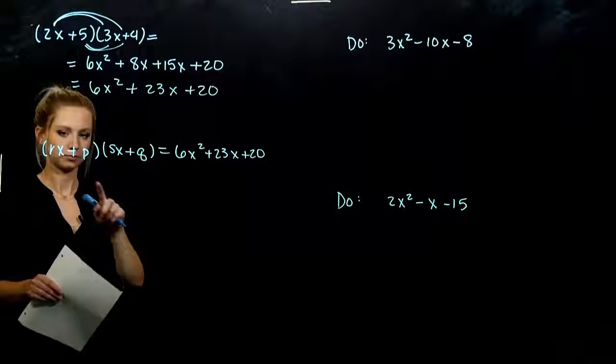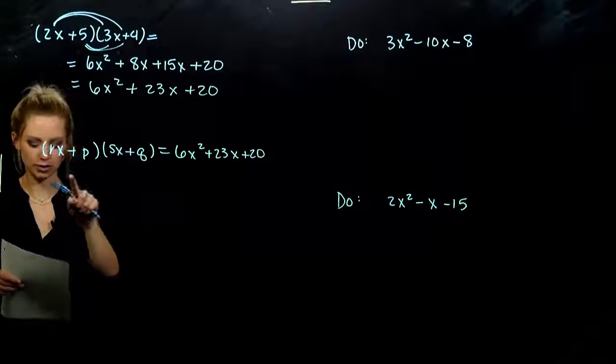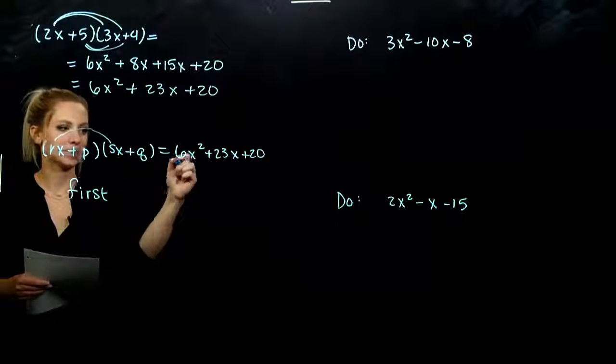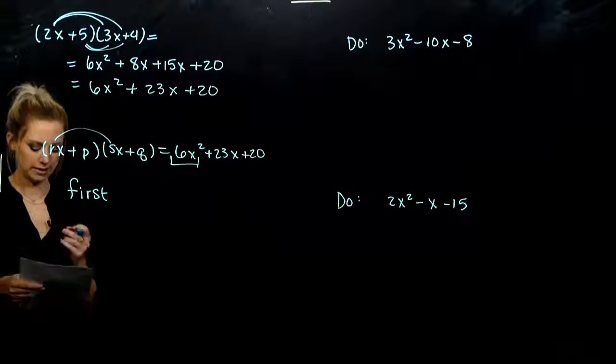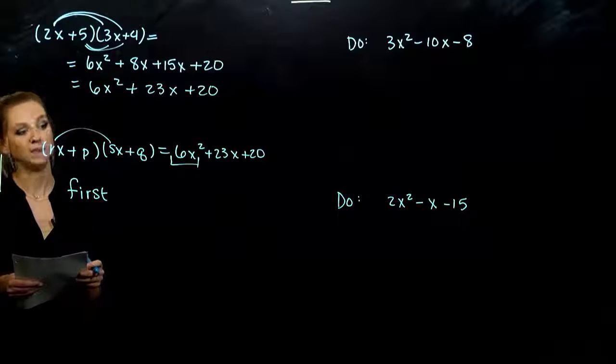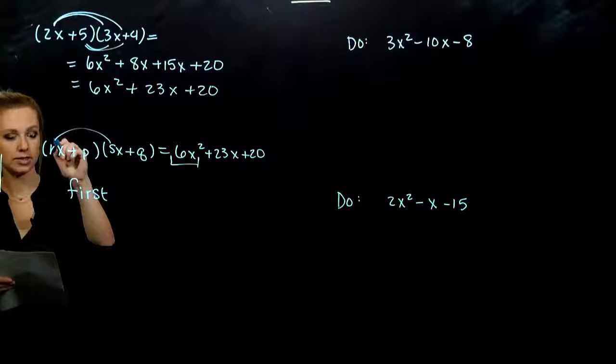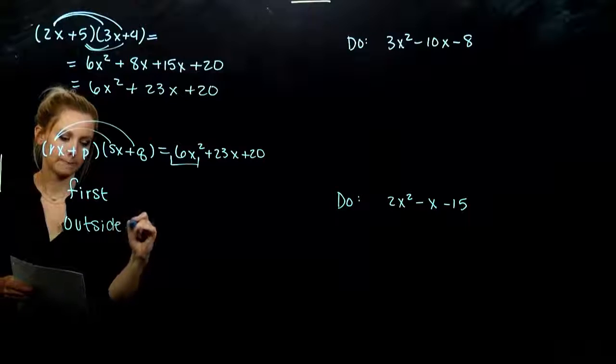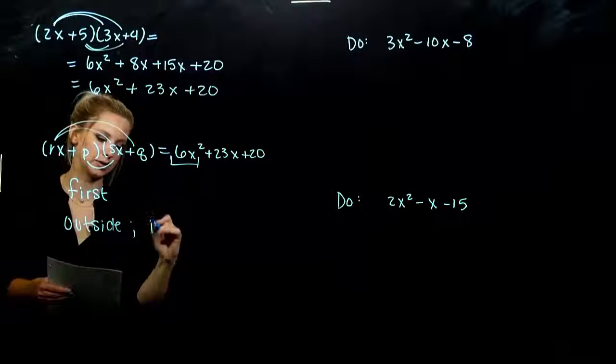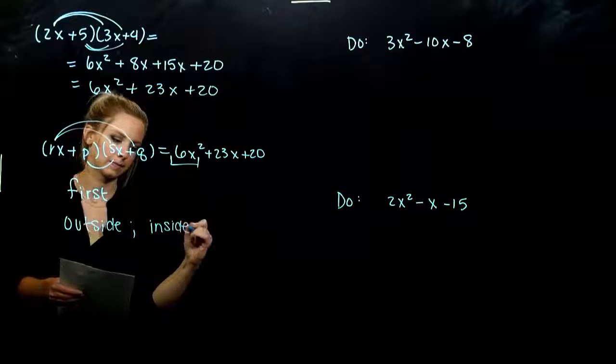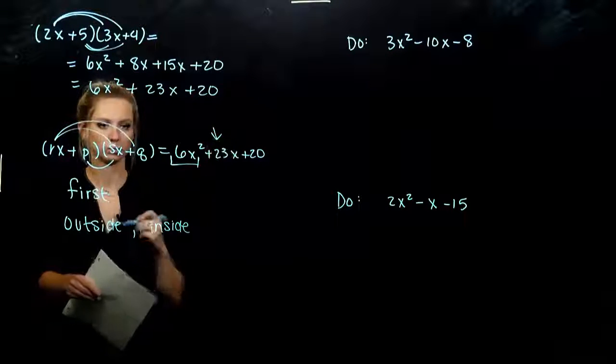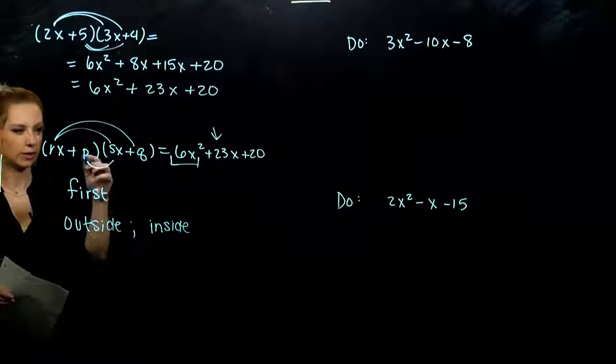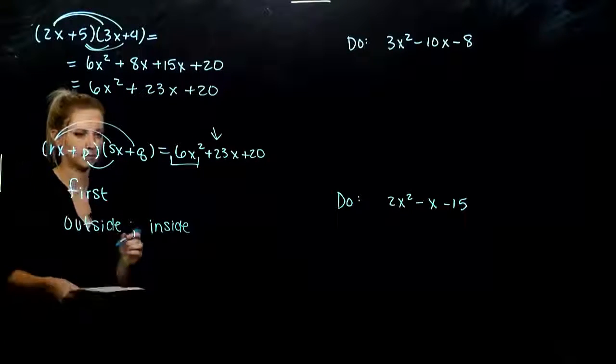So what does that mean? The product of the first two terms has to be 6x squared. We need that first thing. Then what? The product of the outside terms plus the product of the inside terms has to give us 23x.